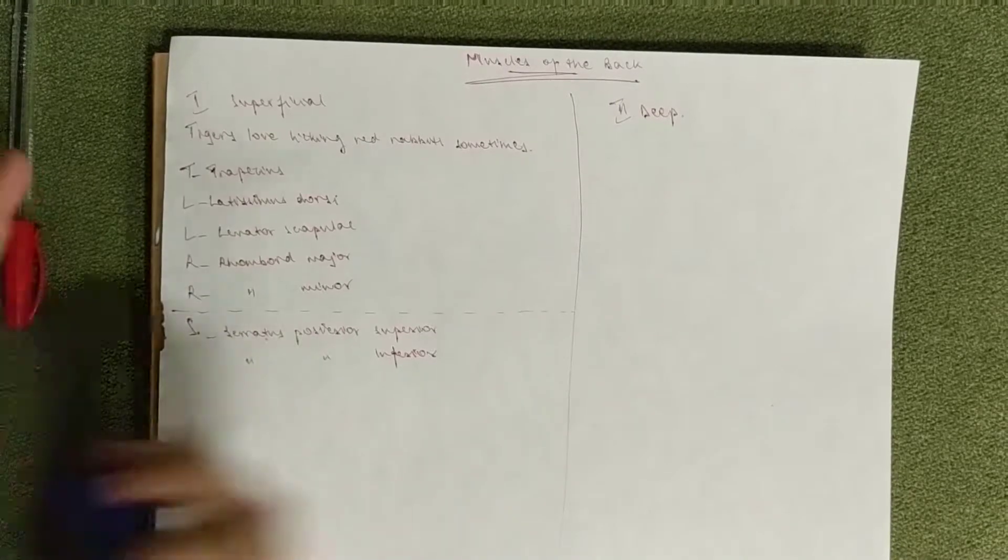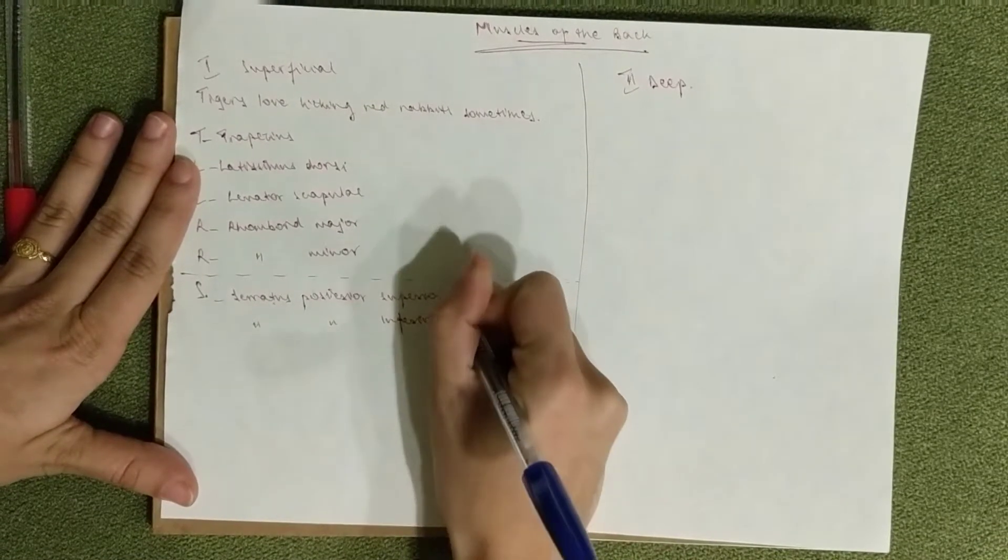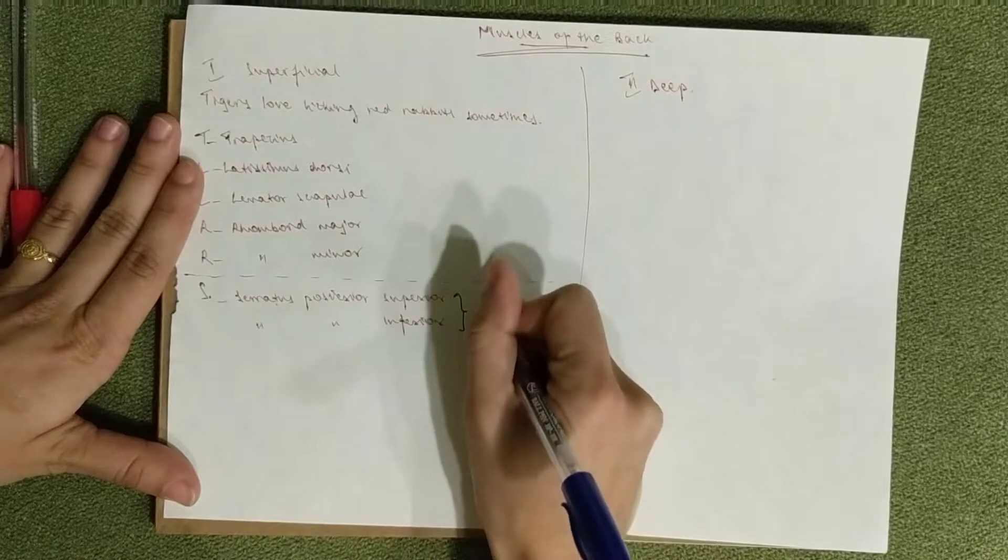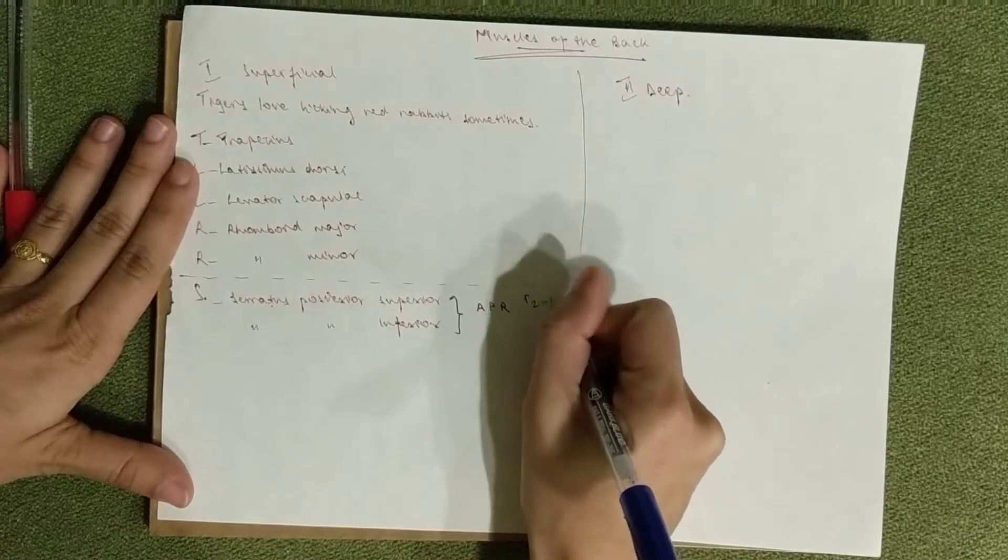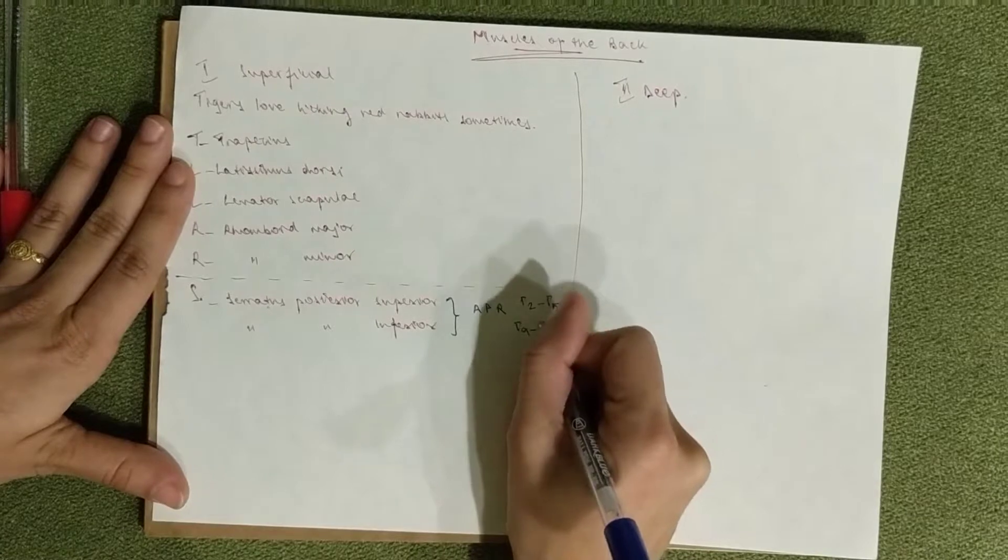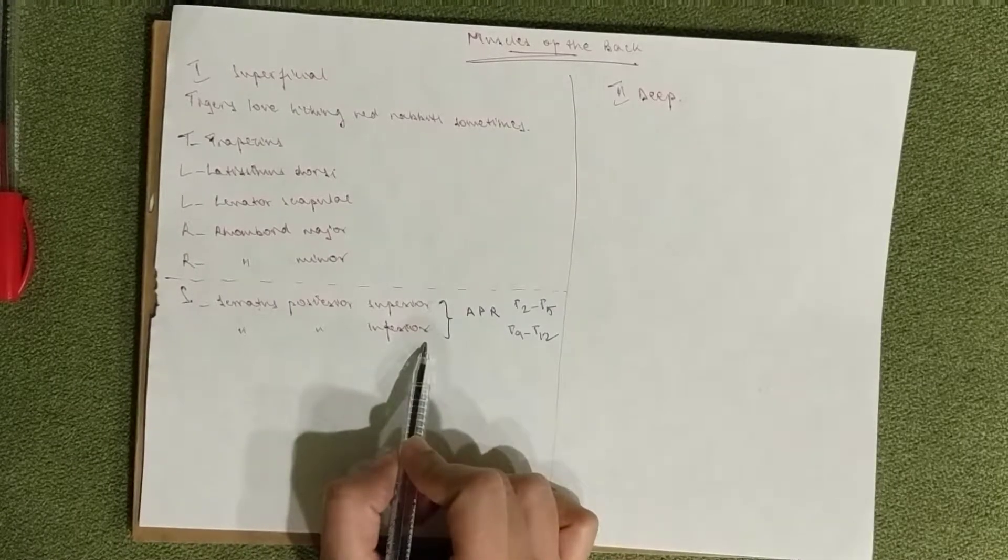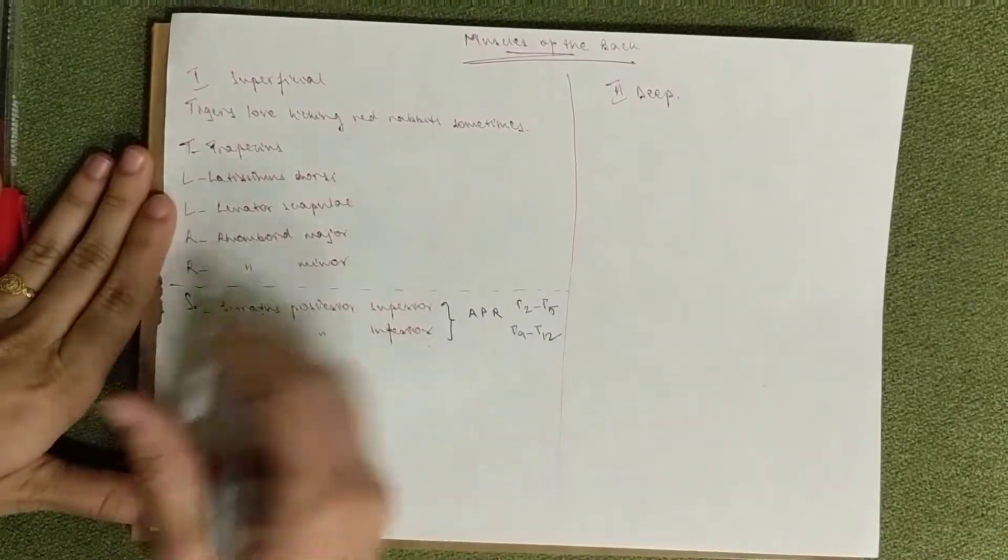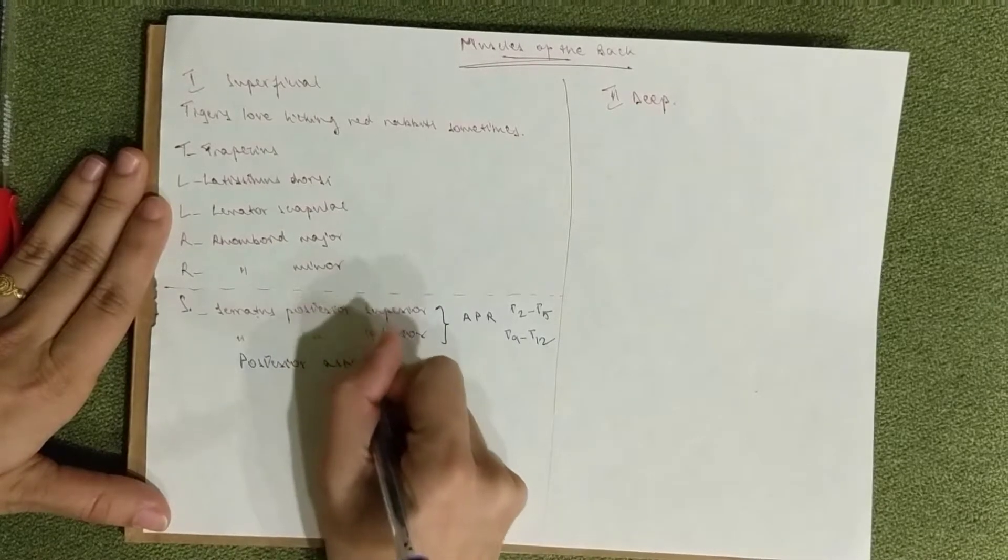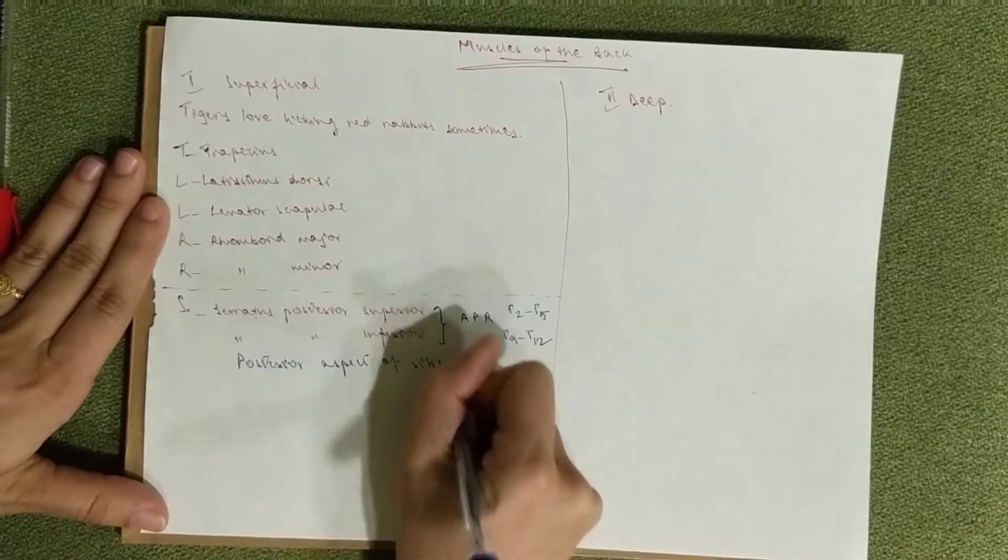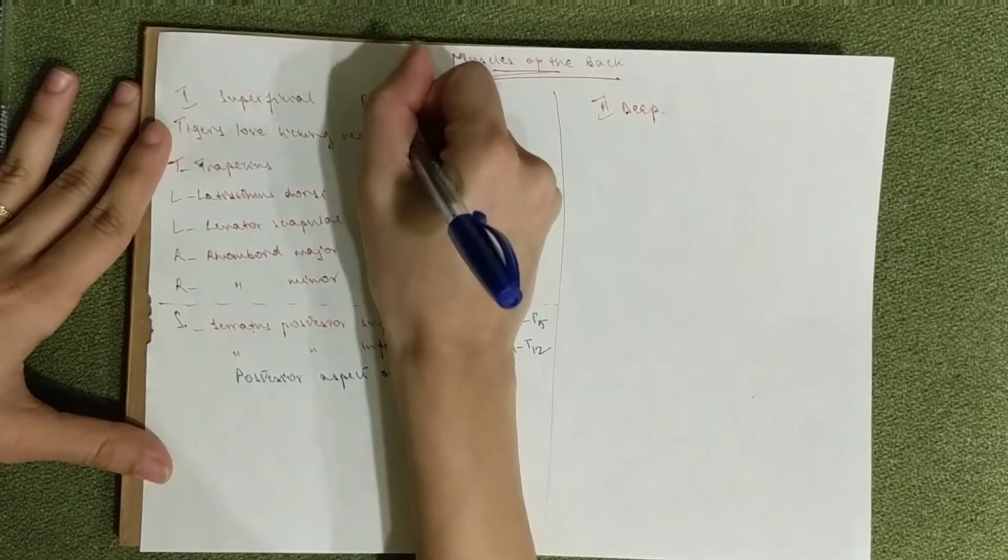Now we need to know the innervation. The serratus posterior muscles are innervated by the anterior primary rami. The superior one is T2 to T5, and the inferior one is T9 to T12. The superior one is for inspiration and the inferior one is for expiration. They attach to the posterior aspect of the ribs. All of the superficial muscles originate from the spine.